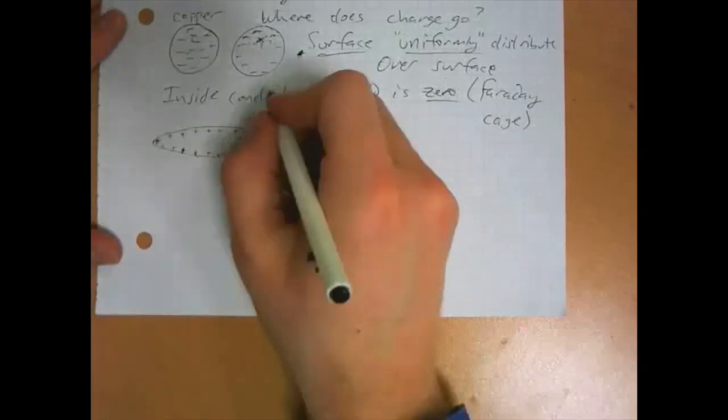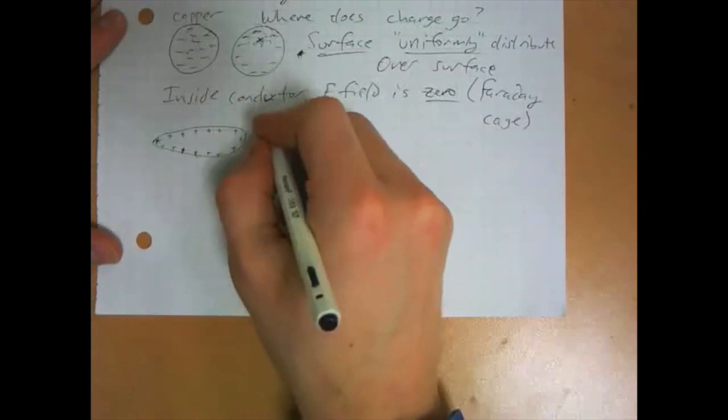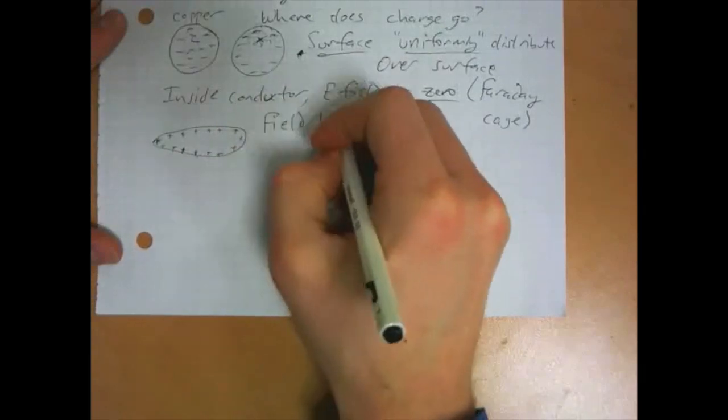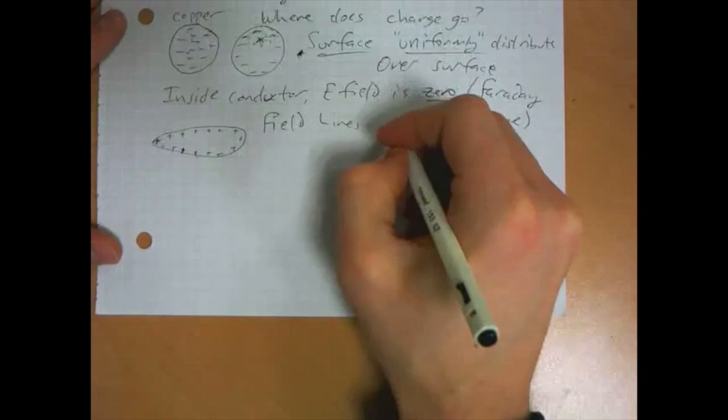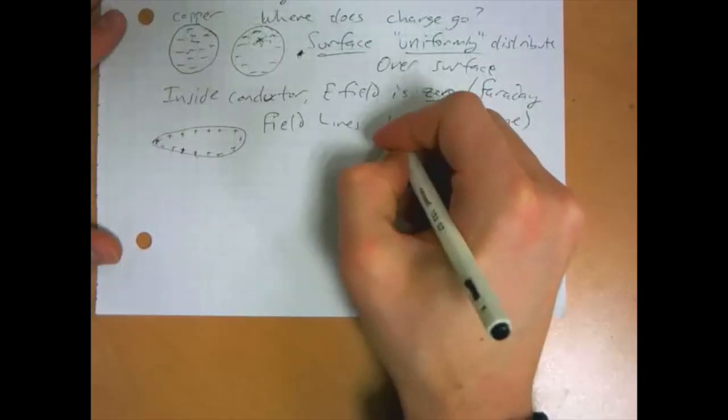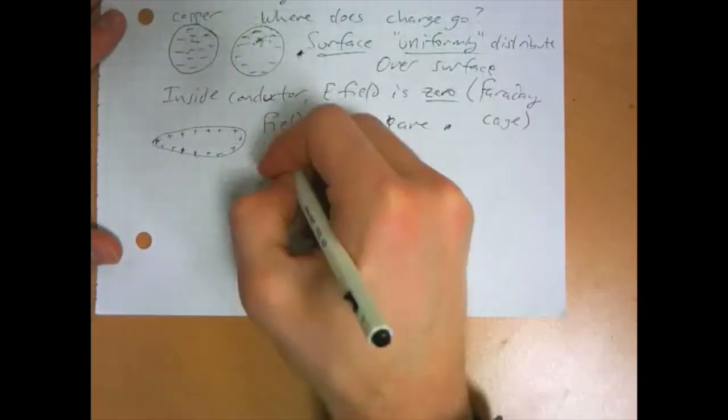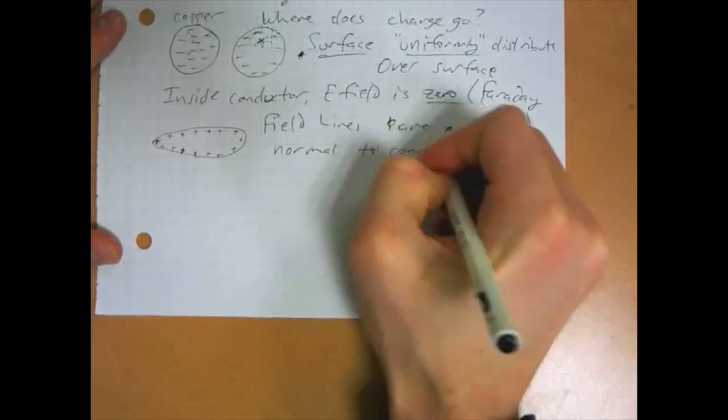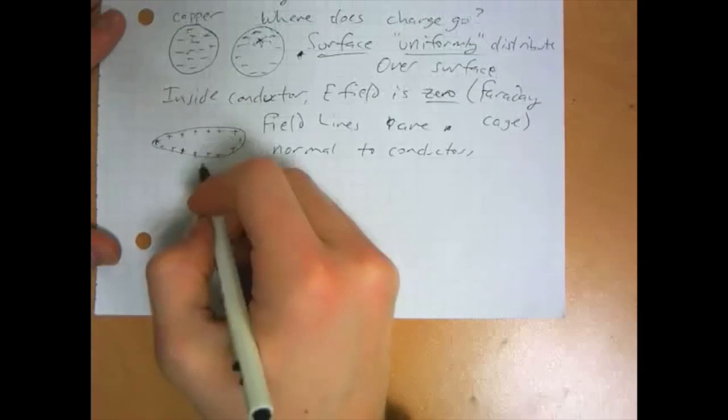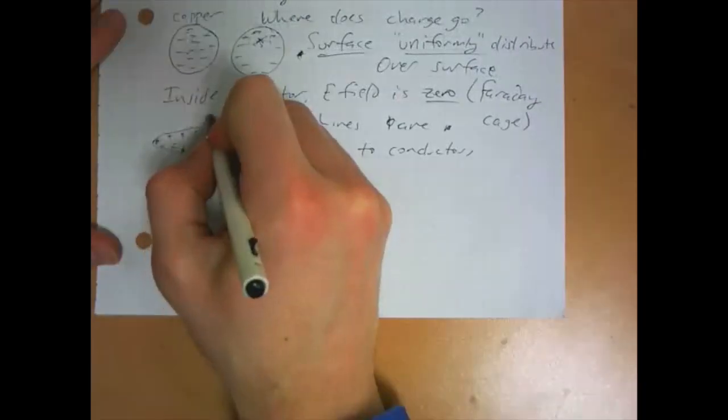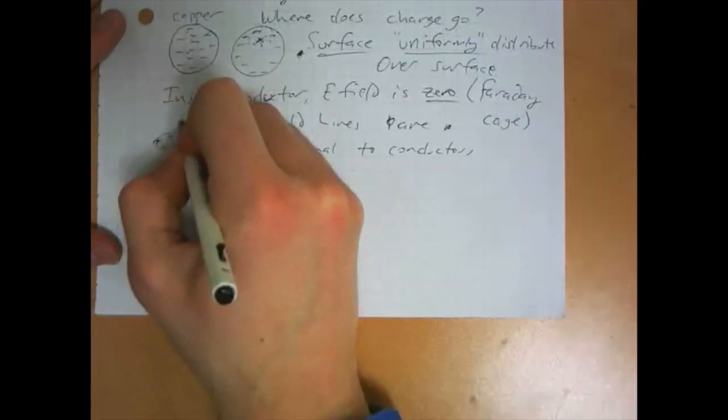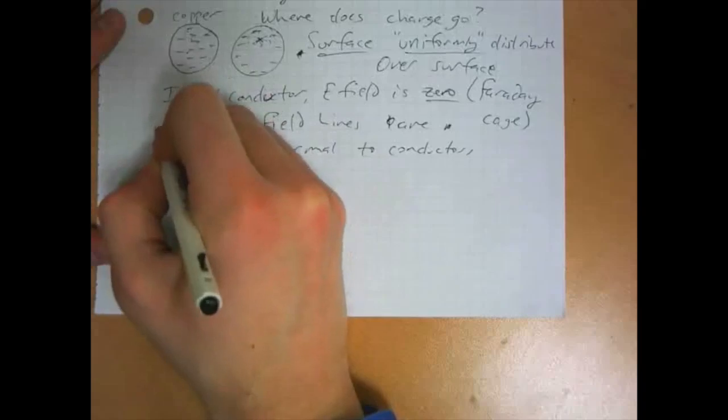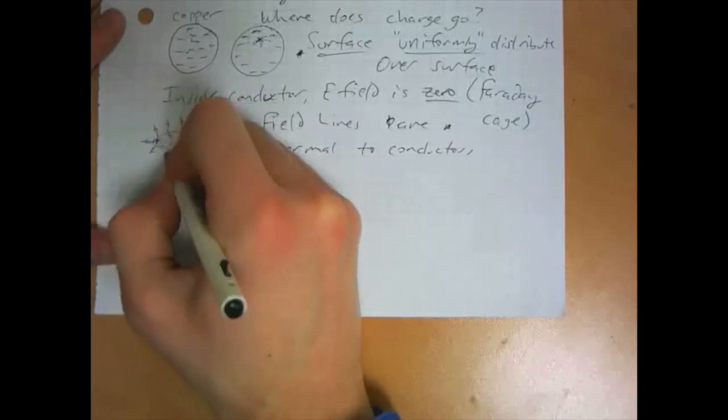So there is no horizontal component of the E field. So one of the rules of our field lines is that field lines are always normal to conductors. They hit conductors at right angles. So whatever else might be happening, field for a positively charged conductor will point away from it, and it will be perpendicular to the surface of the conductor.